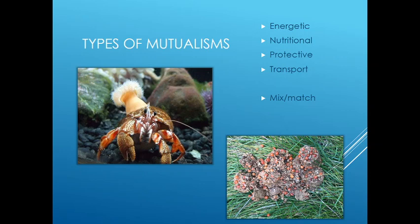When we think about different mutualisms, there are basically four types: energetic, nutritional, protective, and transport. It's not that both organisms get the same thing from each other — rather, one player gets one of these four things and the other player gets something else they're not as good at. So you can mix and match. This hermit crab here is getting protection from the sea anemone it put on its shell, and the sea anemone is getting transported around — they're getting different things.